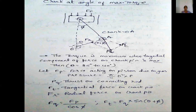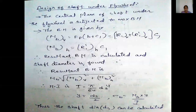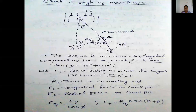Next, we calculate the crank at an angle of maximum torque. Looking at this diagram: this is the piston, which is connected to the crankshaft via the connecting rod — this is the connecting rod. Forces are applied on the piston as Fp. We take Ft and Fq as forces on the equations. The torque is maximum when the tangential component of force on crank pin is maximum, and theta is taken as 25 degrees to 40 degrees.